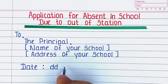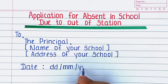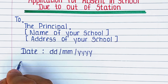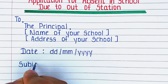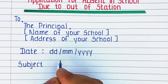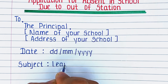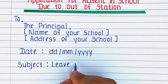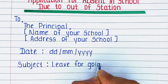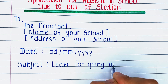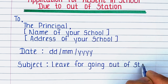Next, write the date in the format: date, month and year. Subject: leave for going out of station.